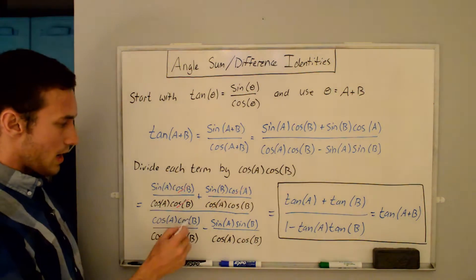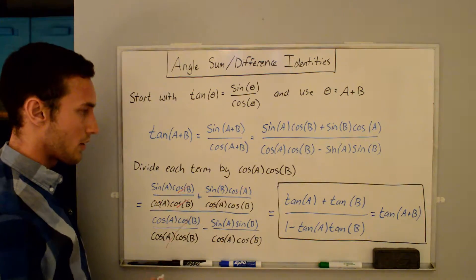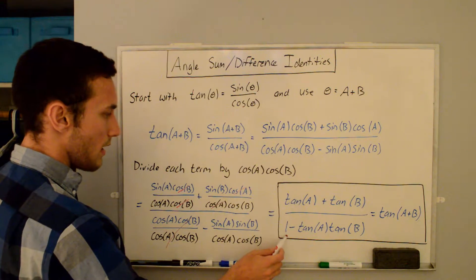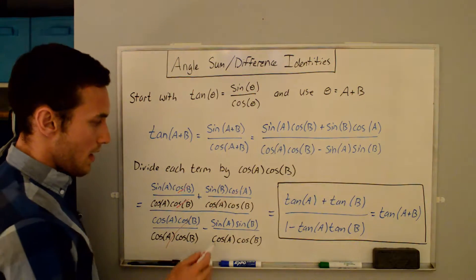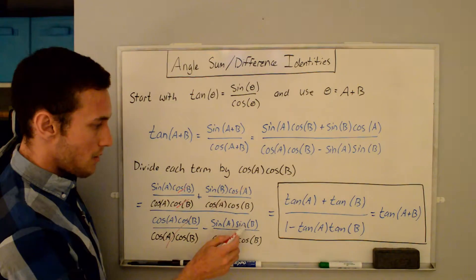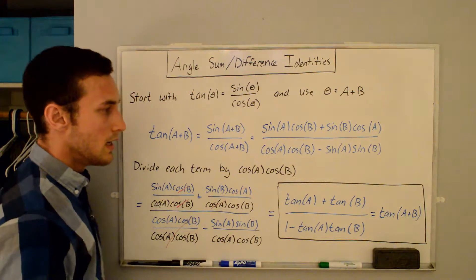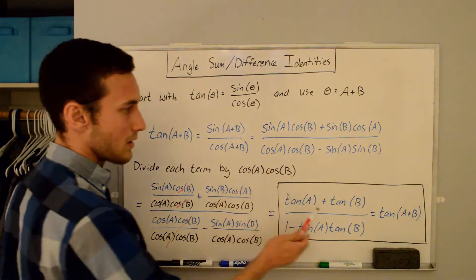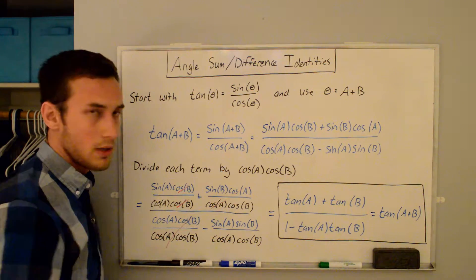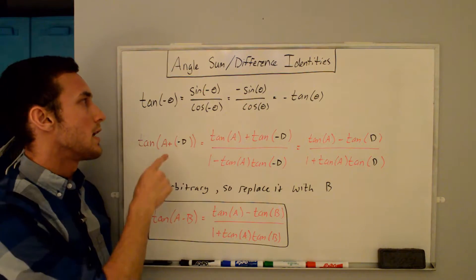On the bottom, cosine a cosine b over cosine a cosine b — that whole term cancels to one, which is why we have the one here. And then we have a minus sign, and we have sine a over cosine a times sine b over cosine b, which is why we have tangent a times tangent b. And so that is the final identity for tangent of a plus b.